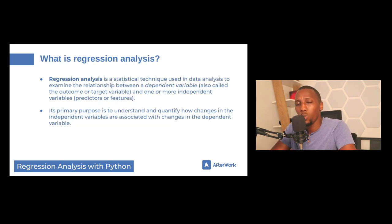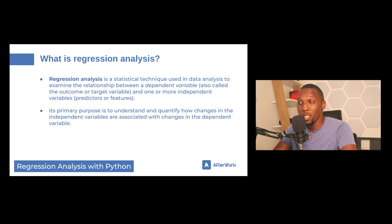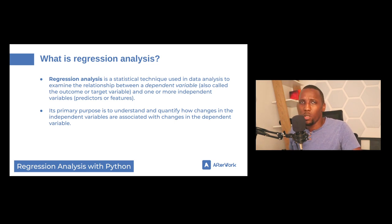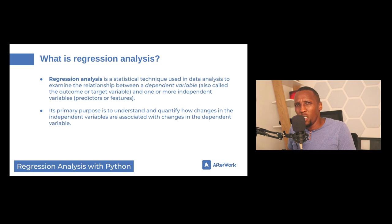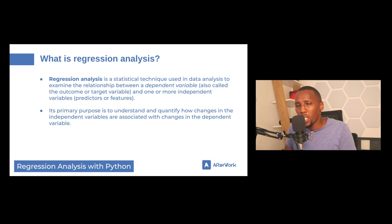So what is regression analysis? It's a type of statistical technique used in data analysis or data science to examine the relationship between the dependent variable and independent variables. In a tabular dataset, we refer to columns as variables. If you want to use that dataset to make predictions, you build a machine learning model. In the dataset, there will be one particular variable you want to predict — the dependent variable.